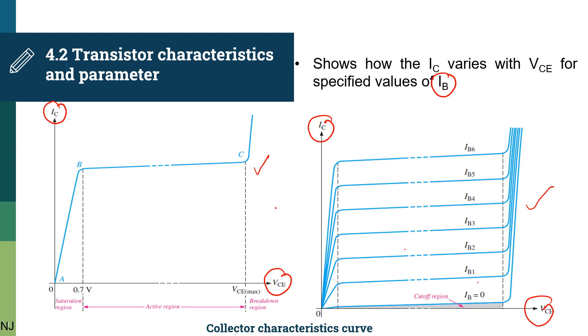From this curve, we can see that there are four regions: saturation region, active region, breakdown region, and finally a cutoff region, which will be discussed later.